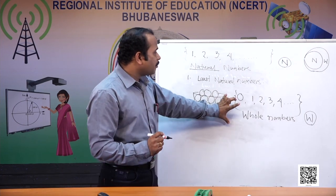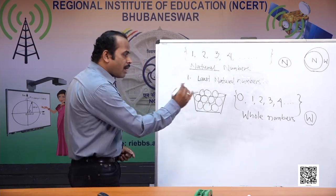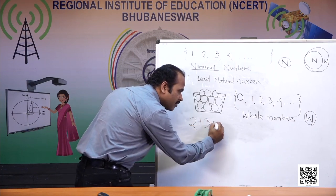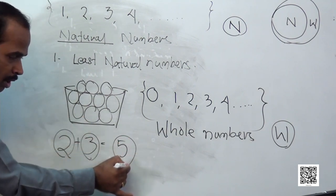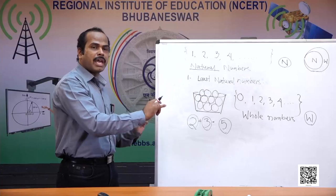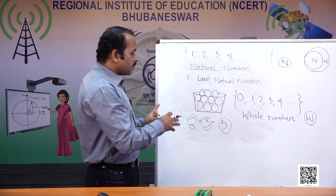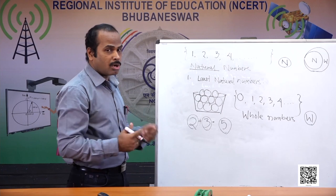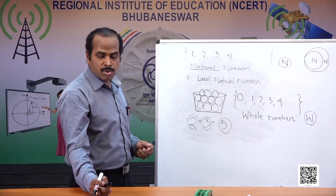After completing whole numbers and natural numbers, we move to another set of numbers. When we operate on whole numbers — for example, 2 plus 3 gives 5 — 2 is a whole number, 3 is another whole number, and adding both gives one more whole number. So addition of any two whole numbers leads to one more whole number. This gives us the idea that whenever we add two whole numbers we always find another whole number. But does this hold for subtraction as well?